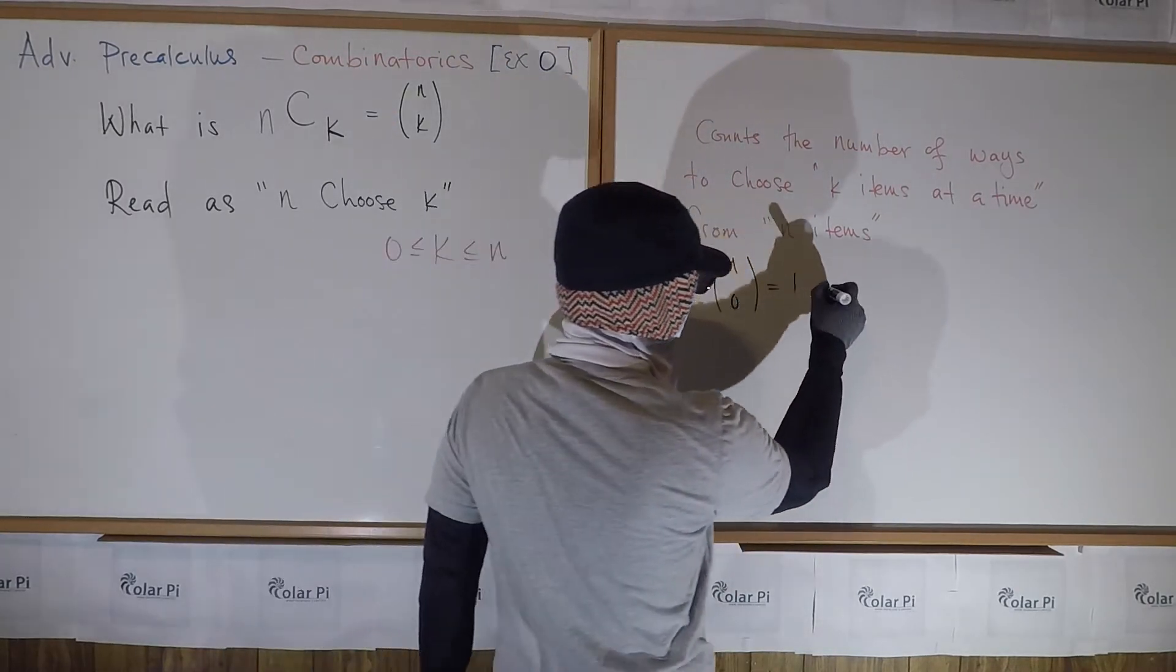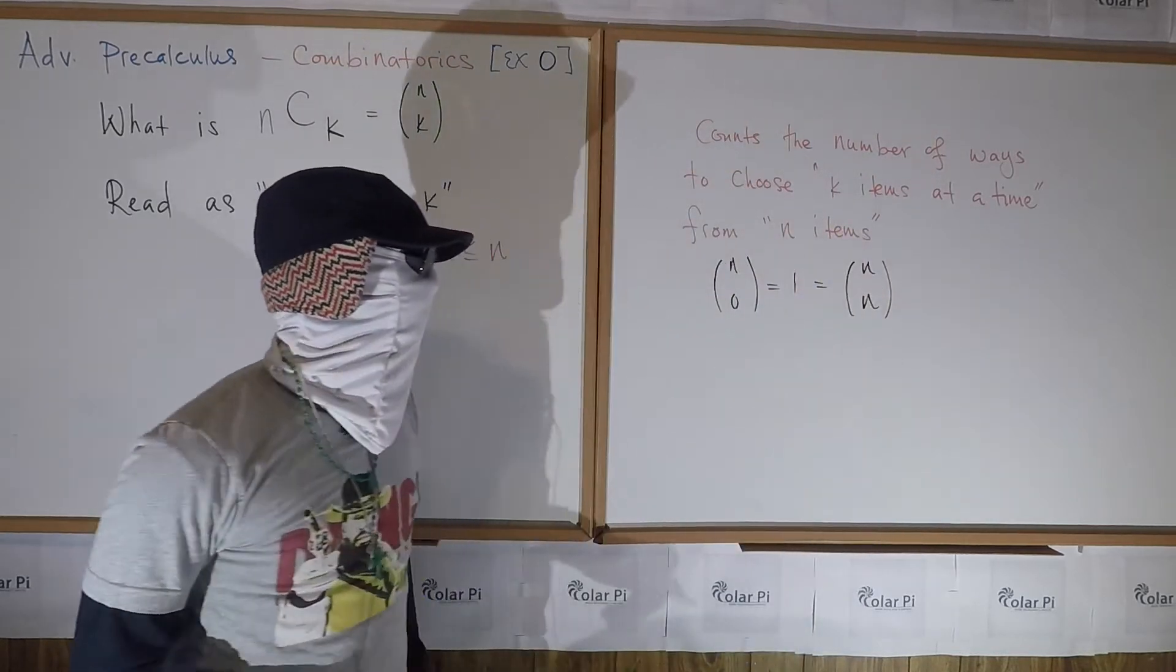Also, as you can imagine, n choose n is also 1, and that's because the number of ways to choose n items at a time from n things is 1 - you choose all of them.